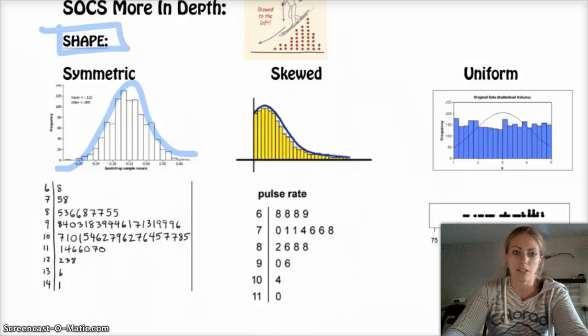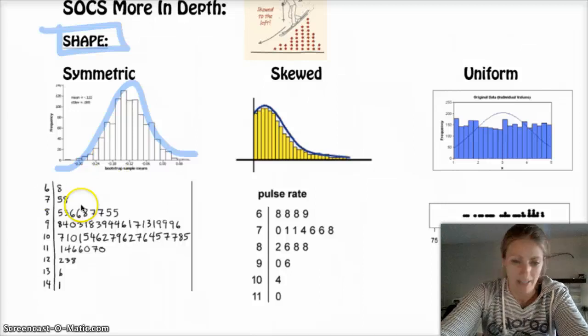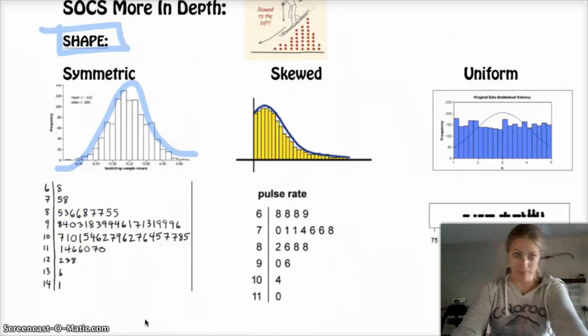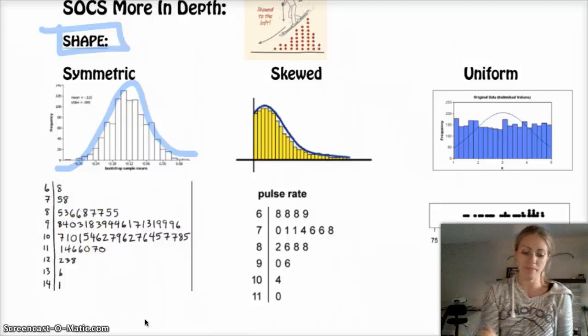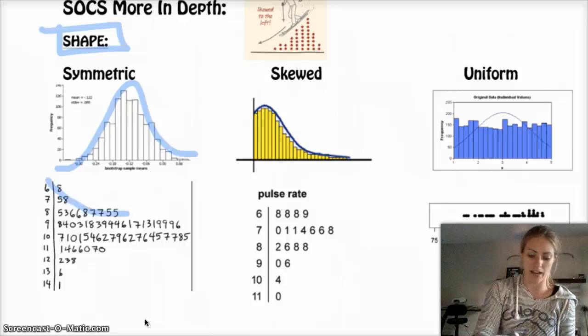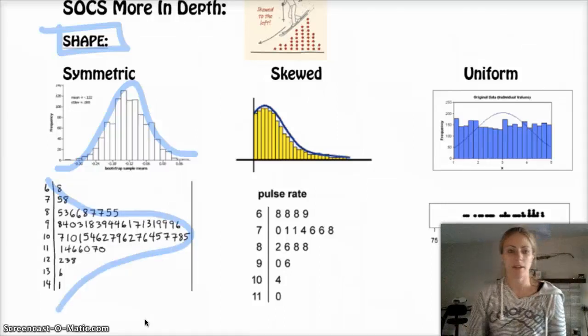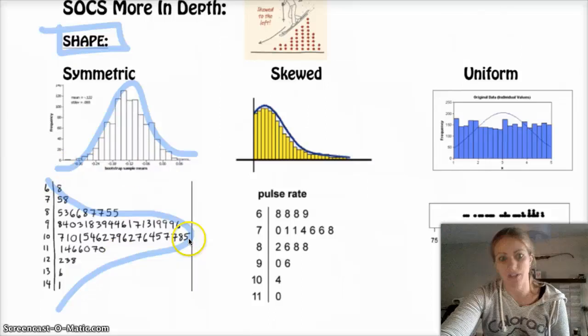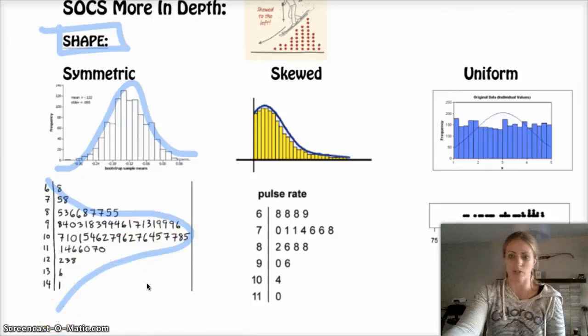This one is a stem and leaf plot. You can describe the shape of a stem and leaf plot as well. Basically, you just flip it on its side and look at the shape sideways. You're generally still looking for general symmetry.